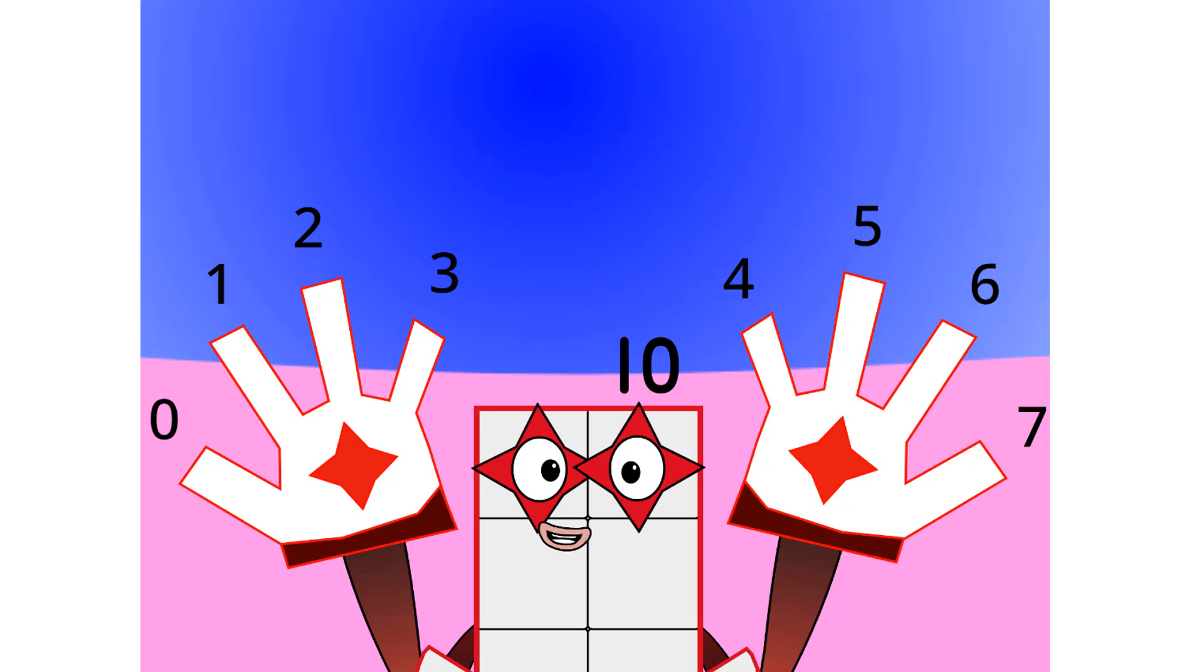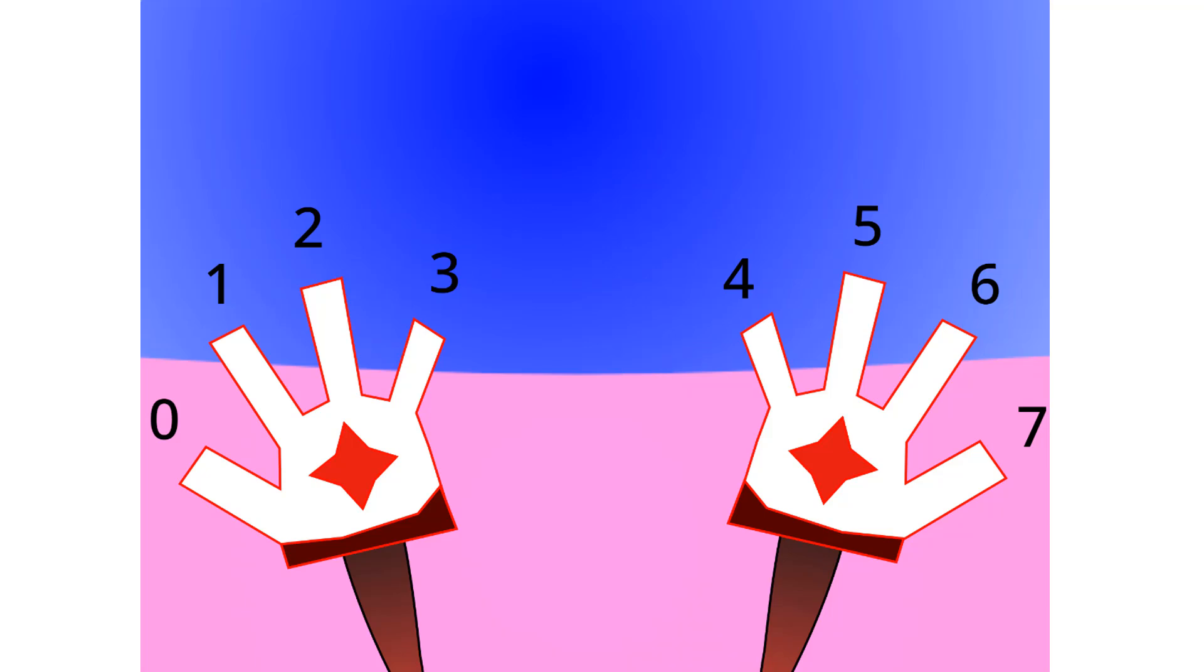Oh wow, looks like I am no longer Octoblock. But I am still called eight, so yeah. This base has eight digits: zero, one, two, three, four, five, six, and seven.